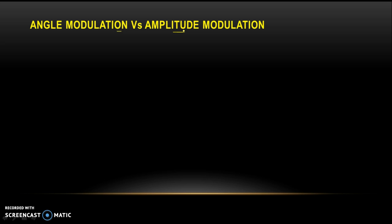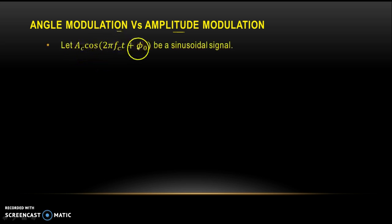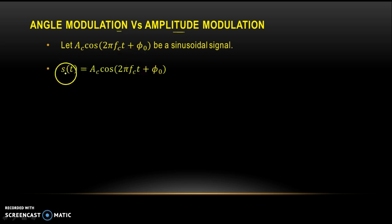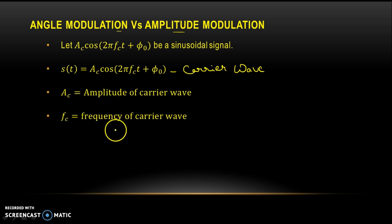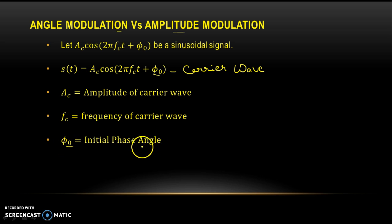Let's first understand what this angle is and how we are going to modulate it. Suppose AC cos(2πfct + φ0) is a sinusoidal signal — this is our carrier wave, represented as s(t). In this carrier wave, AC is the amplitude, FC is the frequency of the carrier wave, and φ0 represents the initial phase angle of this carrier wave.